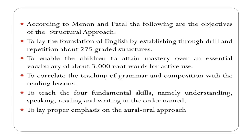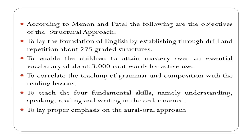Another objective was to enable children to attain mastery over an essential vocabulary of about 3,000 root words for active use. Active use means vocabulary we use in speaking or writing, while passive vocabulary is what we understand but do not frequently use. A further objective was to correlate the teaching of grammar and composition with reading lessons, and to teach the four fundamental skills — understanding, speaking, reading, and writing — in that order, and to lay proper emphasis on the oral approach.